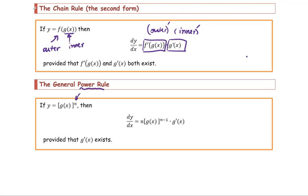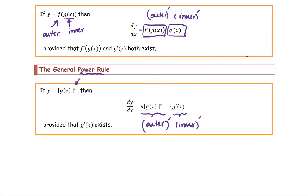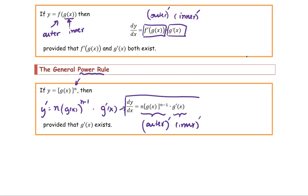To find the derivative, find the outer function derivative, which is the derivative of the inner function. If we rewrite it, y prime is found by taking the derivative of the outermost, which is the power n, multiplied by the inner function quantity raised to the power n minus 1, and then multiplied by the derivative of the inner function — which is the same as the formula provided here.